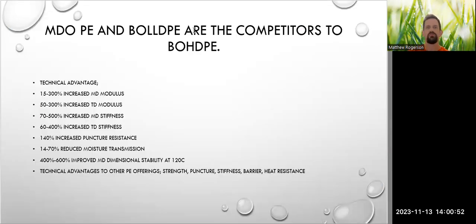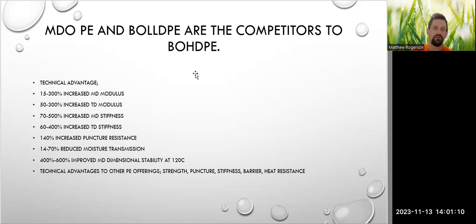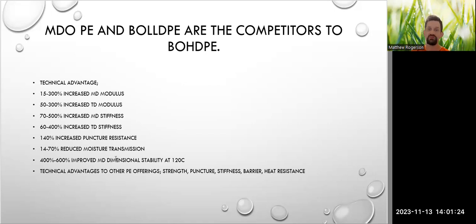Machine direction oriented polyethylene and biaxially oriented linear low density polyethylene are the main competitors to biaxially oriented high density polyethylene. There is a technical advantage for BO HDPE: it has increased modulus, increased stiffness, increased puncture resistance, improved machine direction dimensional stability, and technical advantages over other PE offerings — including better strength, puncture resistance, stiffness, barrier, and heat resistance.